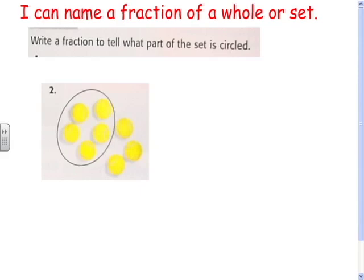Write a fraction to tell what part of the set is circled. So here's the whole set. How many are there all together? One, two, three, four, five, six, seven, eight. So there are eight.